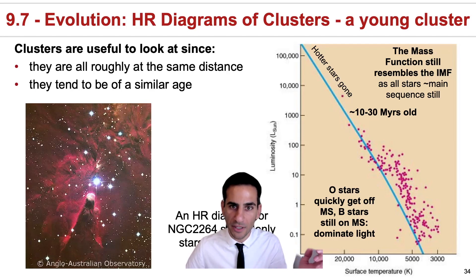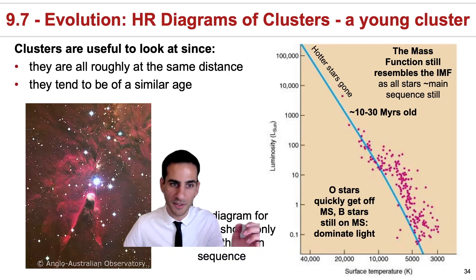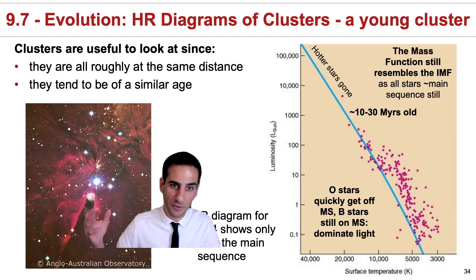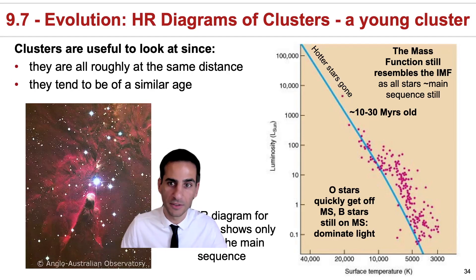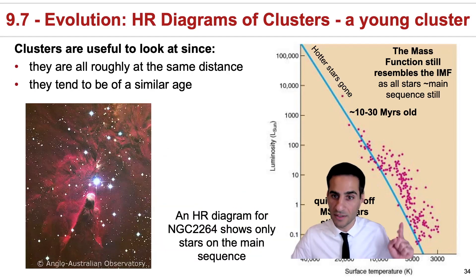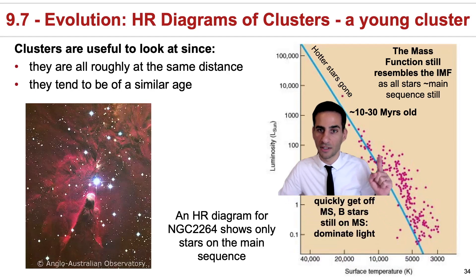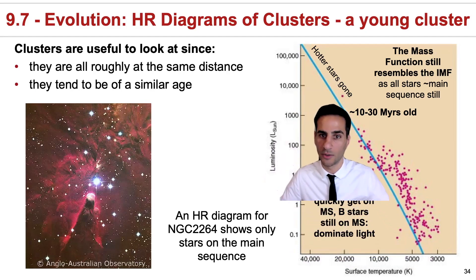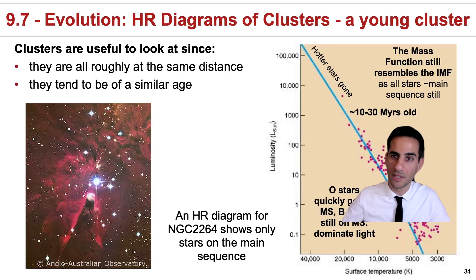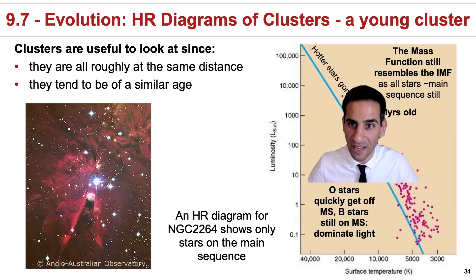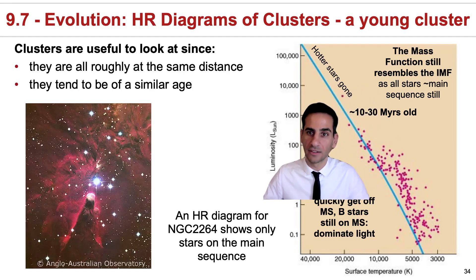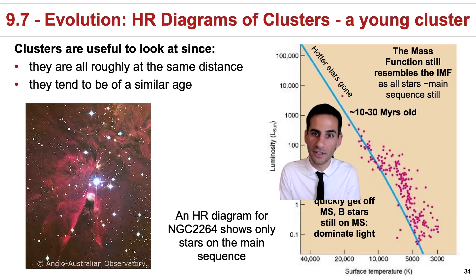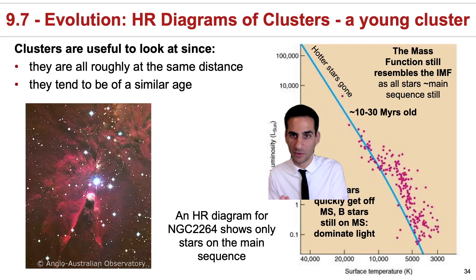If we look at some of the youngest clusters — for example, what we call an HII region or star forming region — those will be the ones with the youngest clusters. If you look at an HR diagram, you will essentially see almost all stars along the main sequence. You will not be able to see any white dwarfs or any red giants, because the cluster is so young that there is not enough time for even the most massive stars to evolve away from the main sequence.